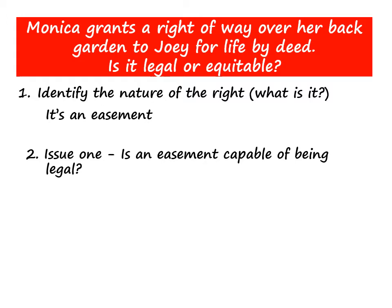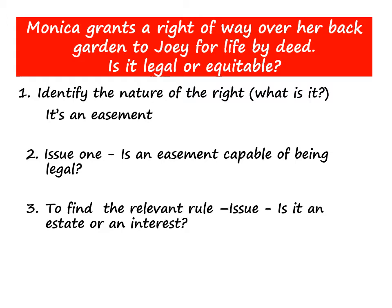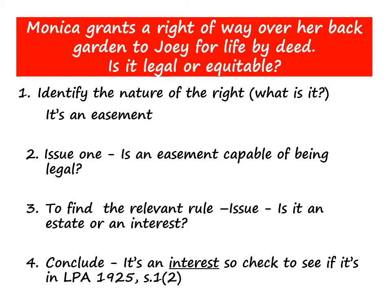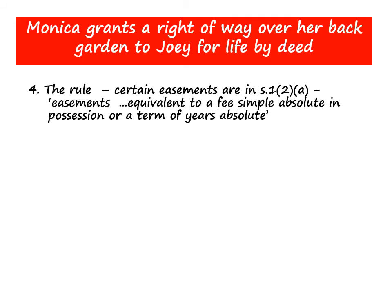To find the relevant rule, we need to decide whether it's an estate or an interest. It's an interest because it's giving Joey a right over somebody else's land — over Monica's land. That means we need to look in section 1, subsection 2, which states that easements equivalent to a fee simple absolute in possession or a term of years absolute are capable of being legal.